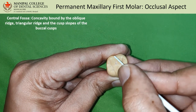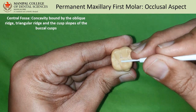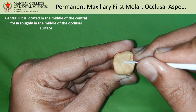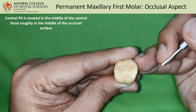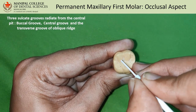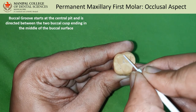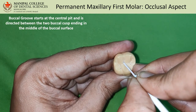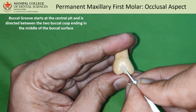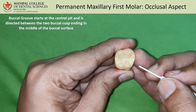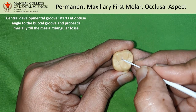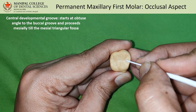The oblique ridge and the triangular ridge confluence form the transverse ridge between the mesio-buccal and mesio-lingual cusps. Along with the distal slope of the mesio-buccal cusp and the mesial slope of the disto-buccal cusp, they form the central fossa. From the central pit there are three important developmental grooves that radiate roughly at 120 degrees. The first is the buccal groove, which extends onto the buccal surface between the two buccal cusps. The central developmental groove radiates in the mesial direction from the central pit, crosses the transverse ridge, and ends at the mesial triangular fossa.